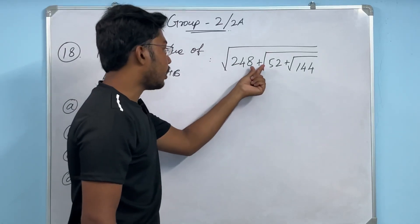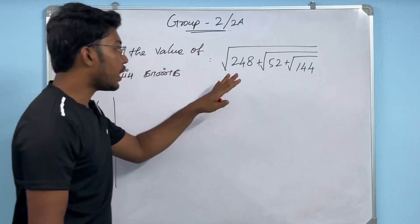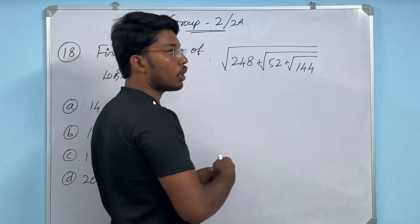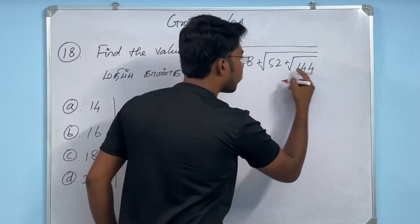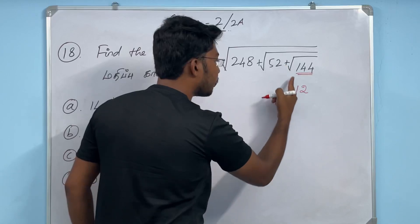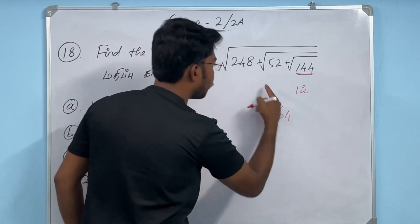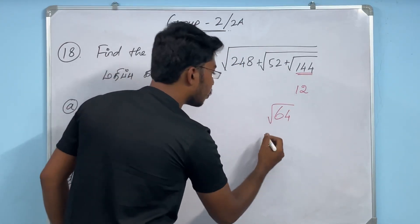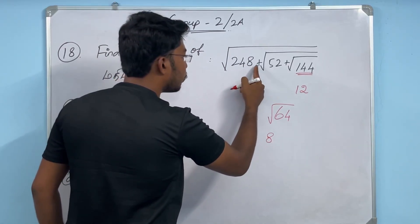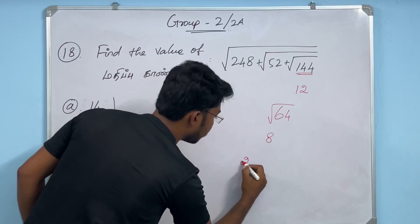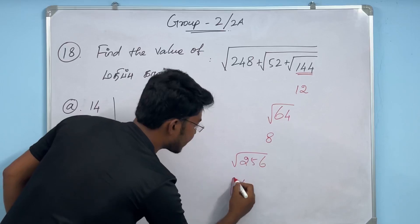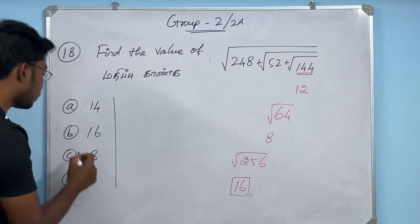Next question involves nested square roots. Root of 144 = 12. 52 + 12 = 64. Root of 64 = 8. Then 248 + 8 = 256. Root of 256 = 16. So this question's answer is 16.